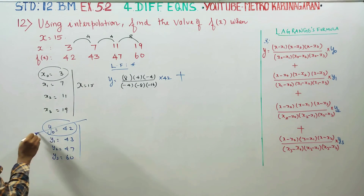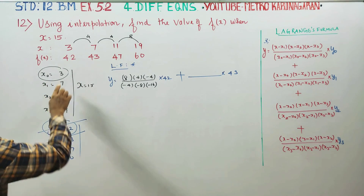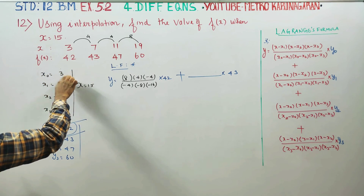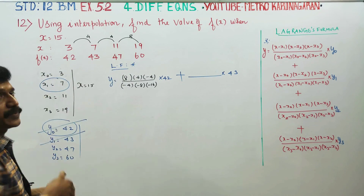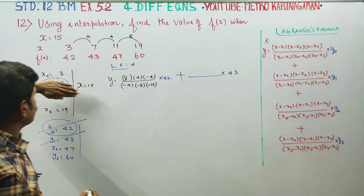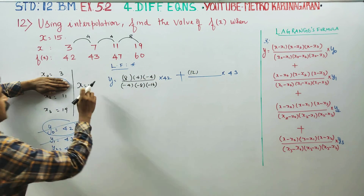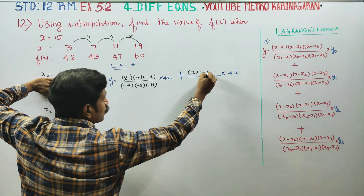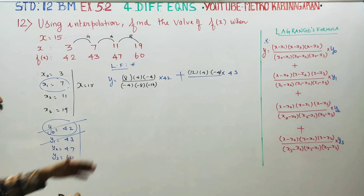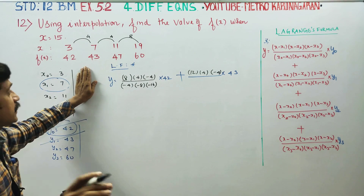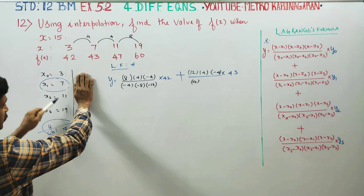For the y1 term: y1 is equal to 43. The numerator uses x as the main player: 15 minus 3 equals 12, 15 minus 11 equals 4, 15 minus 19 equals minus 4. Then 7 minus 3 equals 4, 7 minus 11 equals minus 4.